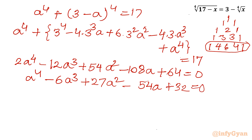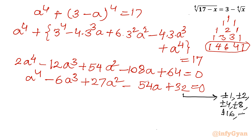Now we apply the rational root theorem. We need to find 4 roots. The eligible rational factors of the constant term 32 are ±1, ±2, ±4, ±8, ±16, ±32. Since the leading coefficient is 1, the ratio is ±1, so all these factors are eligible as possible roots.